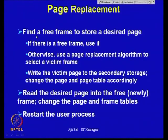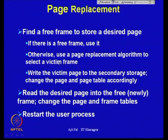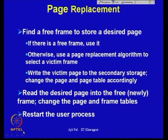For page replacement: find a free frame to store the desired page — if a free frame exists, use it. If not, use a page replacement algorithm to select a victim frame, write the victim page to secondary storage, change the page table entry accordingly, read the desired page into the free frame, update the page table, and restart the user process.